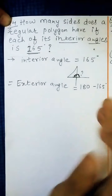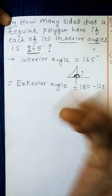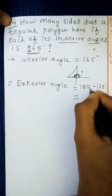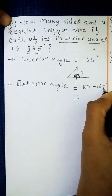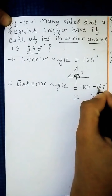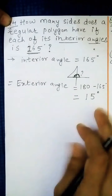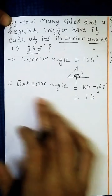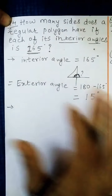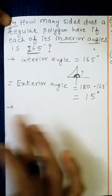To find the exterior angle, we will do 180 minus 165 degrees, because they form a linear pair. So 180 minus 165: 10 minus 5 is 5, 7 minus 6 is 1, giving us 15 degrees. So 15 degrees is our exterior angle. We also know that the sum of all exterior angles is equal to 360 degrees.